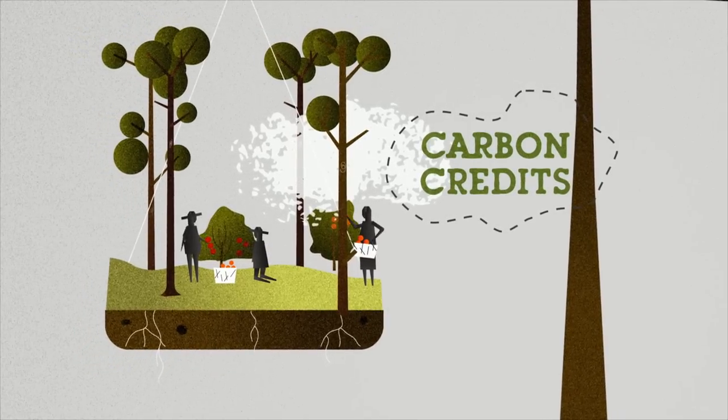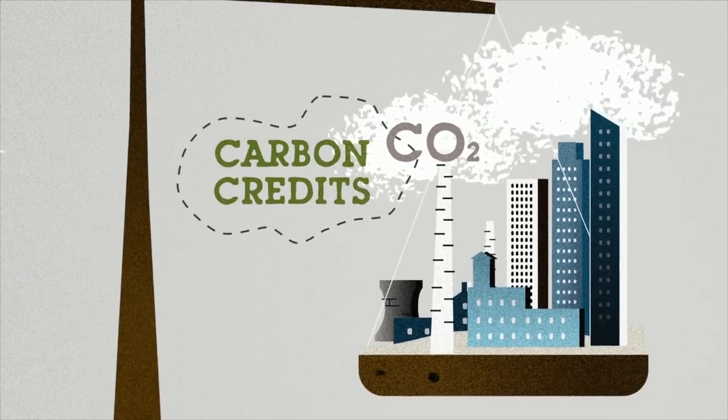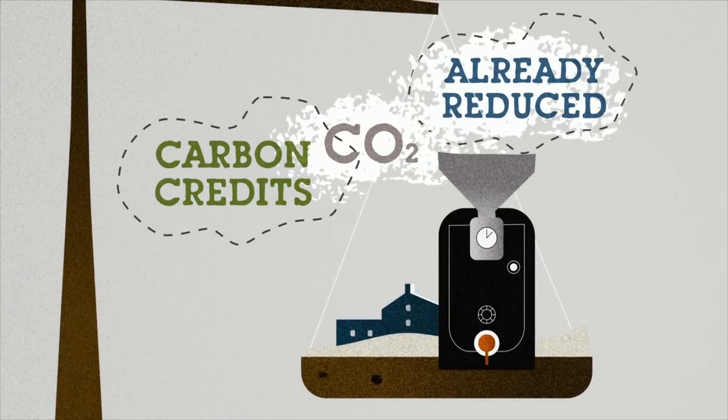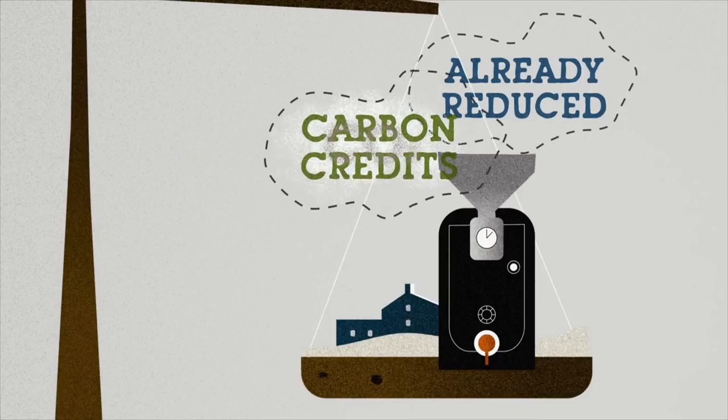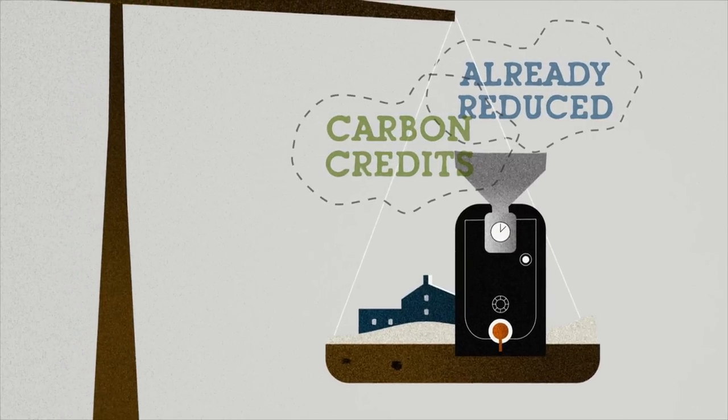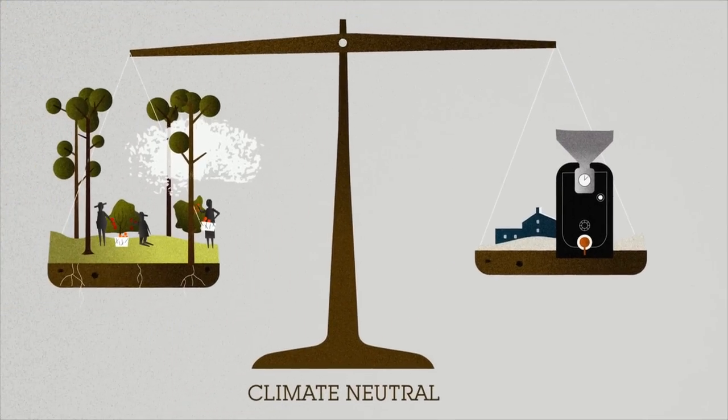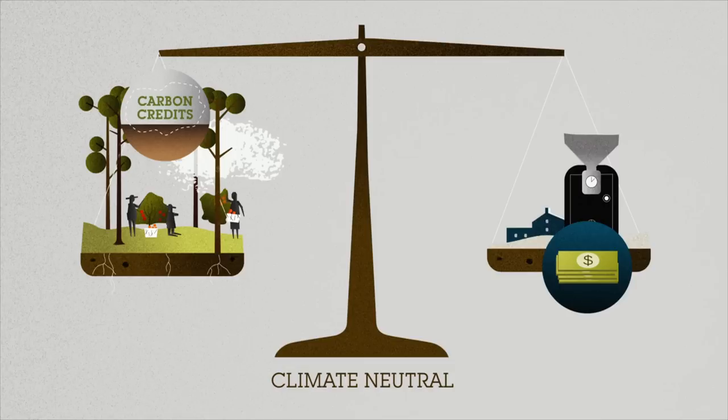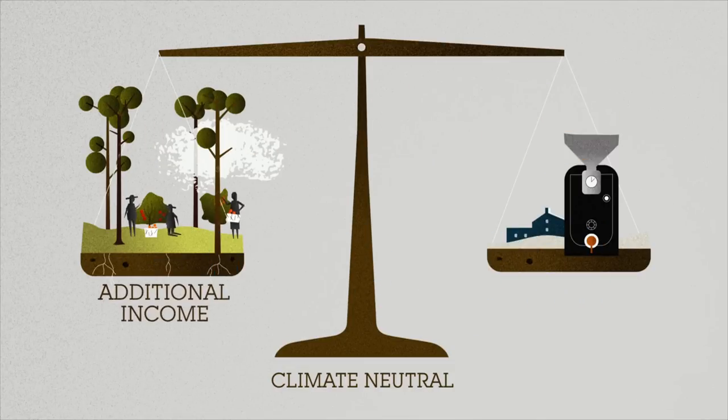They can then sell these credits to companies and others looking to offset their carbon footprint. For instance, a coffee roaster. With the purchase of these credits, coffee roasting companies can compensate for the carbon emissions in their coffee supply chain that couldn't be reduced. This makes their coffee climate-neutral coffee. The coffee farmers get a fair price for their carbon credits, which provides them with additional income.